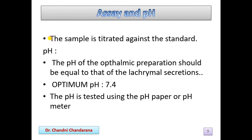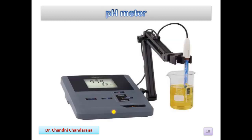For the assay, the sample is titrated against the standard. For pH, the pH of the ophthalmic preparation should be equal to that of lacrimal secretions — the optimum pH is 7.4. The pH is tested using pH paper or a pH meter. Using the pH meter, we dip the electrode into the solution and measure the reading on the instrument.